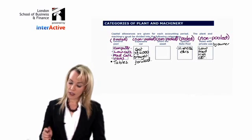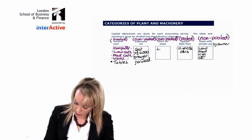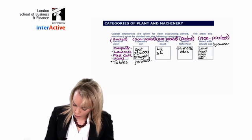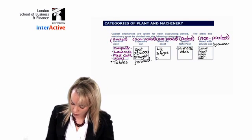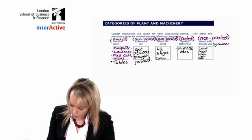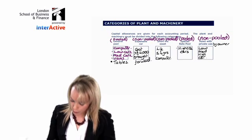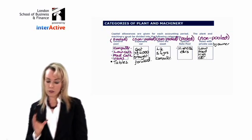Short life assets have an asset life of less than or equal to four years and would be something like a computer. We say that the computer is depooled. So first of all, we need to know what plant and machinery is.